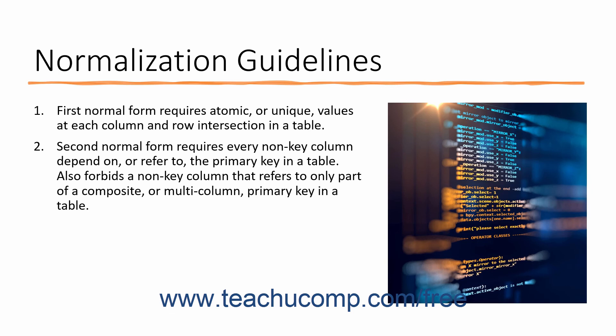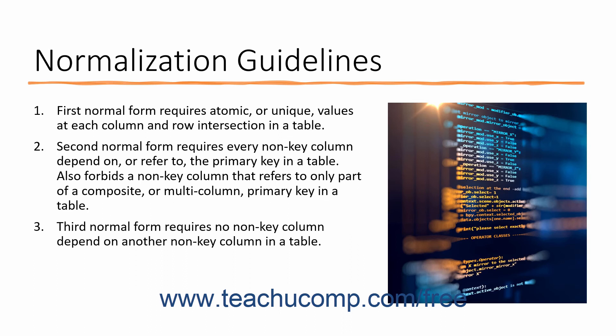Second Normal form requires that every non-key column in a table must depend on, or in other words refer to, the primary key. A table must also not contain a non-key column that pertains to only part of a composite or multi-column primary key. The third Normal form requires that no non-key column should depend on another non-key column in a table. This is very similar to the second Normal form — you shouldn't have a field that is an attribute of a non-primary key column in a table.